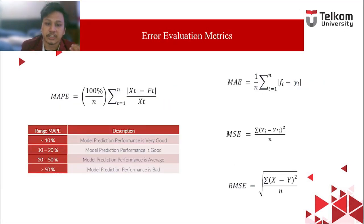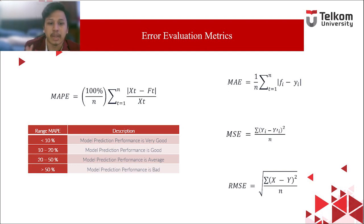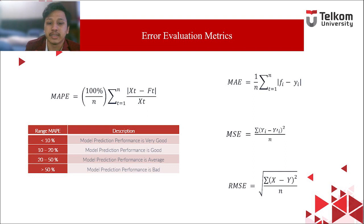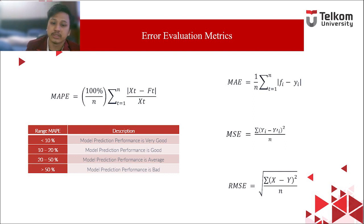Next are the prediction evaluation metrics, which describe how good our predictive model is compared to actual data. For our research, we use four evaluation metrics. The first is Mean Absolute Percentage Error (MAPE), which calculates the percentage deviation between actual and predicted data — this is our main evaluation metric. The second is Mean Absolute Error (MAE), showing the average absolute error. The third is Mean Square Error (MSE), calculated by squaring the average error. The fourth is Root Mean Square Error (RMSE). In general, the lower the values of these metrics, the better our network is.